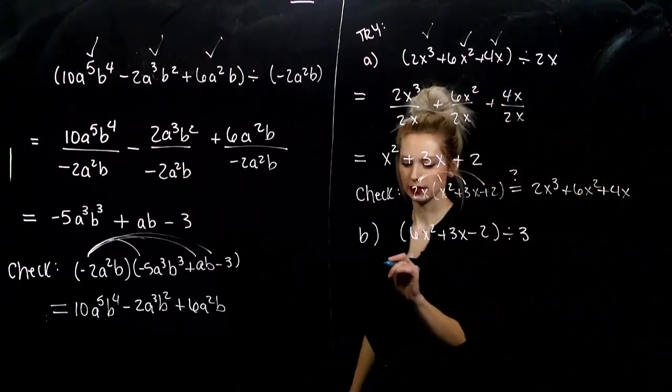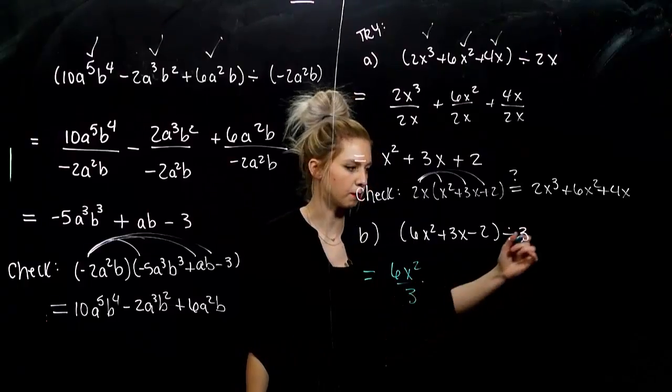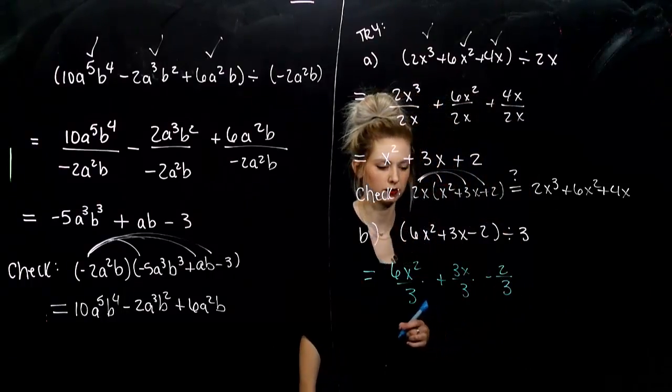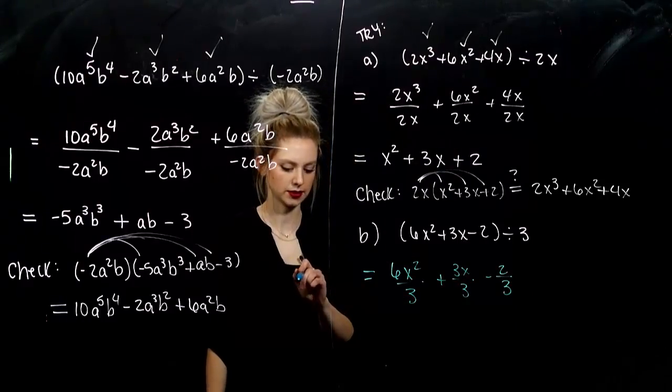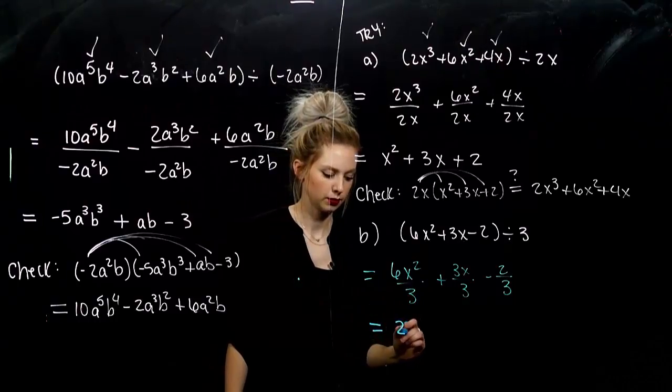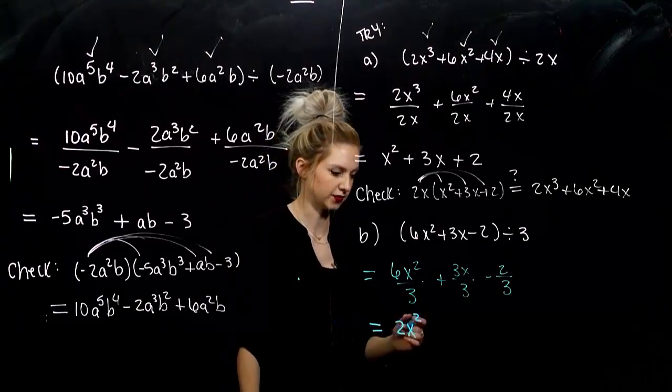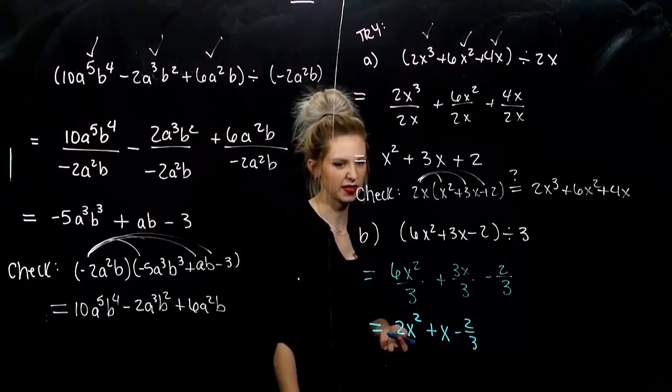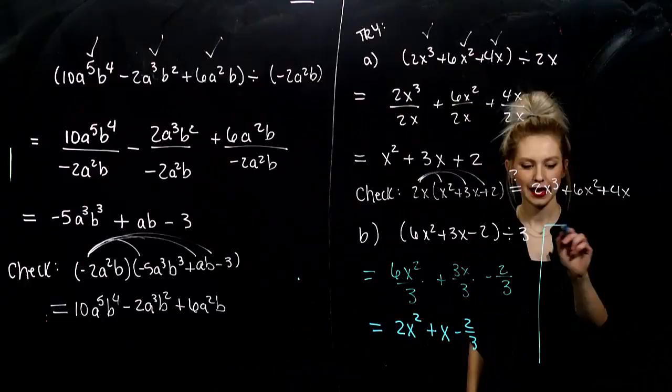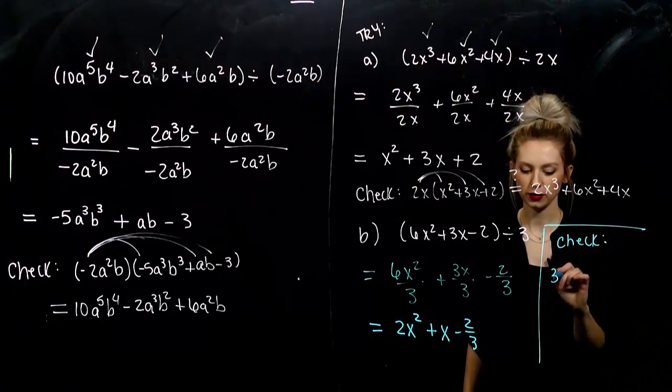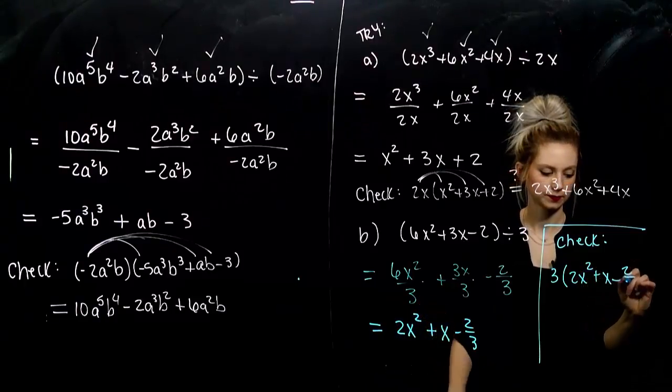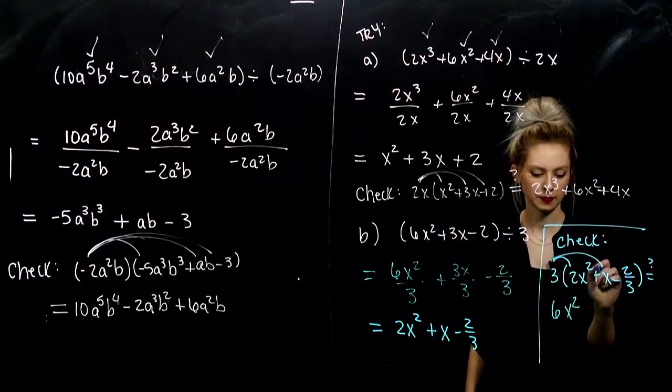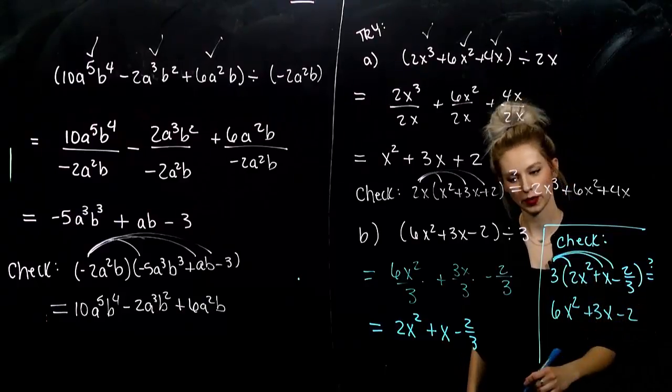Alright. For the final one here. Again, every single term, we can take and divide by the monomial. Take each term. Divide by the monomial. Last term. Divided by monomial. Alright. So, as we start to simplify, what are we looking at? 6 divided by 3. 2. No x's to cancel. That's fine. 3 divided by 3. 1. Still have an x left. And negative 2 thirds. We can't simplify that unless you want to actually do the division. That's okay. And, to check. If I take my monomial 3 times it by what I got out, is it equal to what we started with in the very beginning? So, let's see. 6x² plus 3x minus 2. We got there. Double checked.